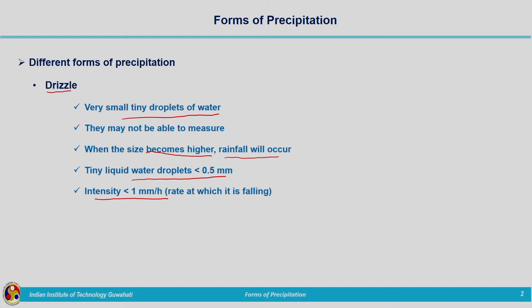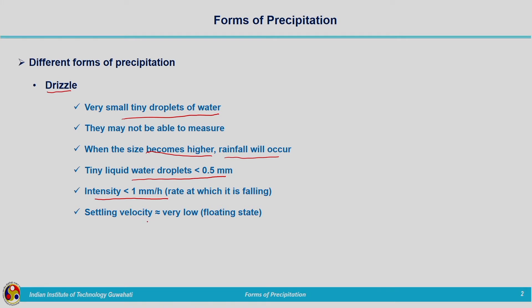The rate with which drizzle is falling is less than 1 mm per hour. The settling velocity — which is the terminal velocity we have seen in the previous lecture — is also very low, which is why drizzle will be in a floating state in the air. That is about drizzle: very small tiny droplets of water.